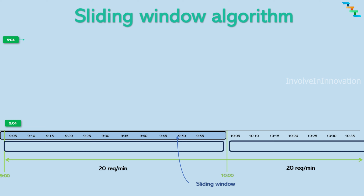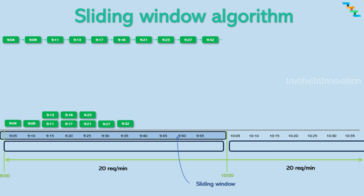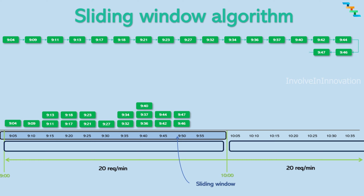When the first request comes in, the linked list is empty, so the request is allowed to be processed and the request timestamp is added to the linked list. When the next request comes in, the head of the linked list is verified to check if it is within the current sliding window range. Here the head is at 9 minutes 4 seconds, which is within the current sliding window range, so this request is also processed and the timestamp is added to the tail of the linked list. When an incoming request arrives at timestamp 9 minutes 52 seconds, the linked list size is already at 20, which is the sliding window limit, so the new request is rejected with response code 429.